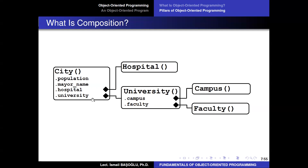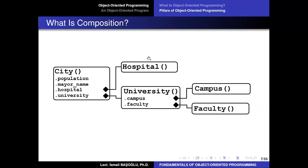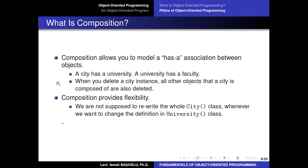However, if you erase a city, the mayor will still exist. Therefore some associations are not in the form of composition. You can define a Mayor class as a human being — a city has a mayor, but the mayor is an independent object. When you demolish the city, the mayor is not erased, whereas hospitals and universities inside the city are.